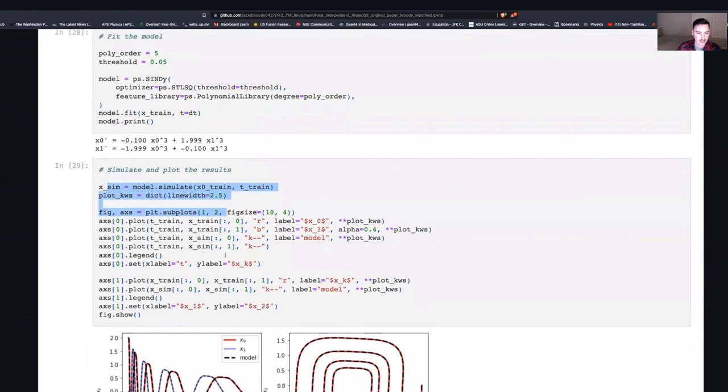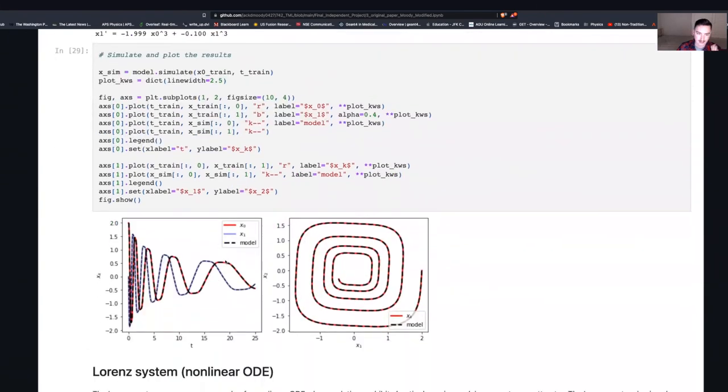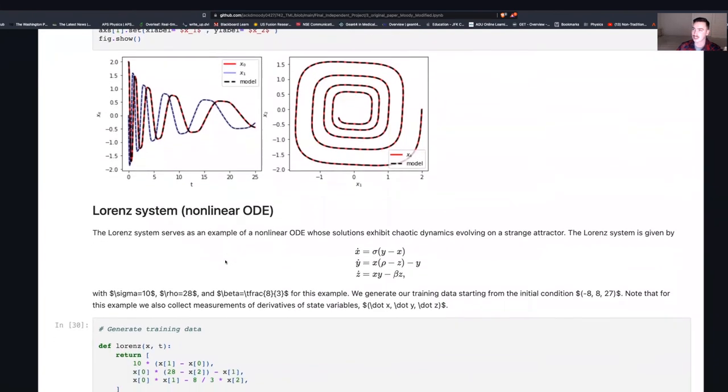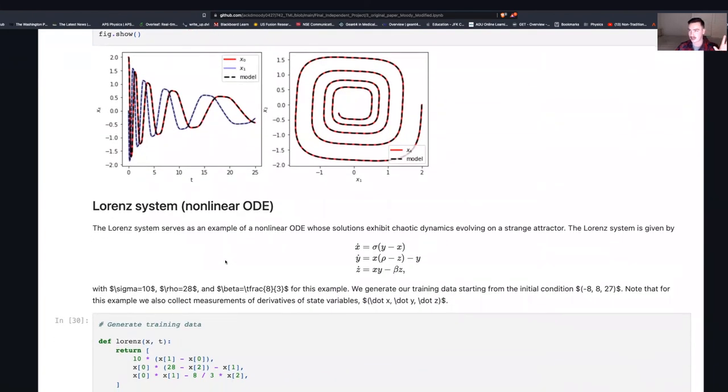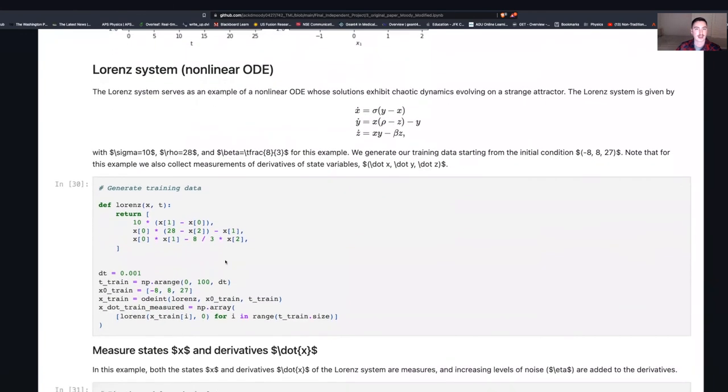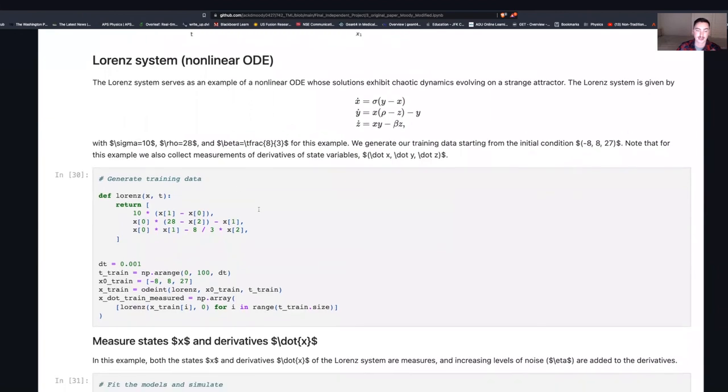Next, we plot it to double check. And it does an awesome job. And just a quick extra example to kind of go back to the first example that we did with the Lorenz equation. This is actually going to be adding some noise this time around. So the Lorenz system serves as a great example for nonlinear ordinary differential equations, which exhibit some chaotic behaviors for a strange attractor evolving on a strange attractor.